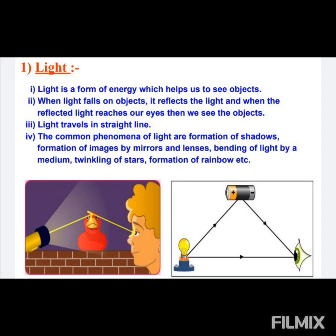There are a number of examples in our daily life to prove this. If you observe the beam of light which comes out from a car, you will see it always travels in a straight line. In the same way, if you see your shadow, it also suggests that light is traveling in a straight line. Similarly, when a beam of light enters a dark room through a gap in the curtains, we always see the light coming in a straight line.